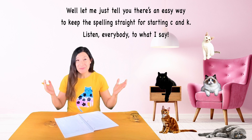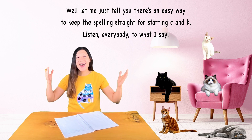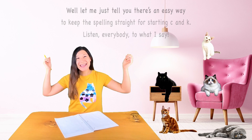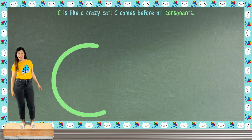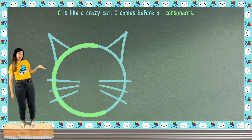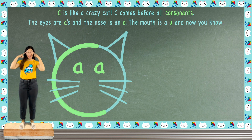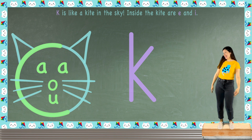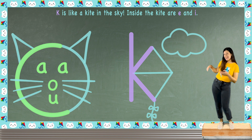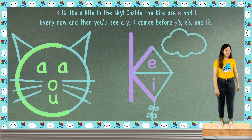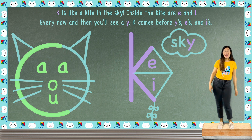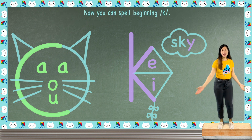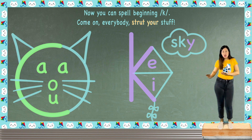Listen, everybody, to what I say. 'Cause C is like a crazy cat. C comes before all consonants. The A's and the O's and the U — now you know. K is like a kite in the sky. Inside the kite are E and I. Every now and then you'll see a Y. K comes before Y's, E's, and I's. Now you can spell beginning K — come on, everybody, strut your stuff!